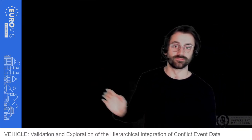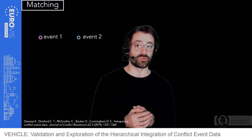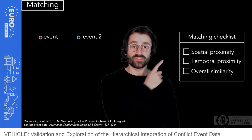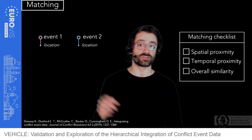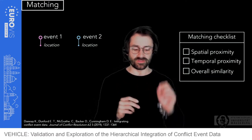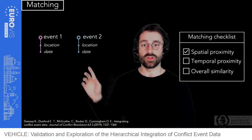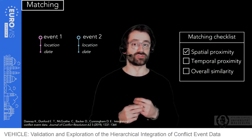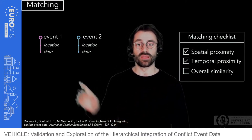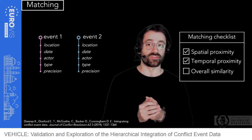Let's take a closer look at how this distinction is made. This is done in a process called matching. In matching, we want to determine whether two events represent the same original incident. Let's set up a matching checklist. The first entry is spatial proximity, dealt with by the location of the events — we can determine whether two events took place close enough to each other, given a certain spatial threshold. We also use the date to determine temporal proximity, and third we have the overall similarity.